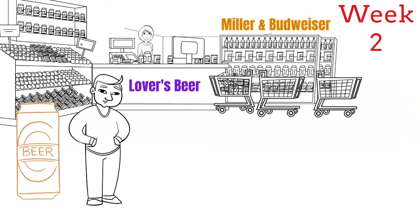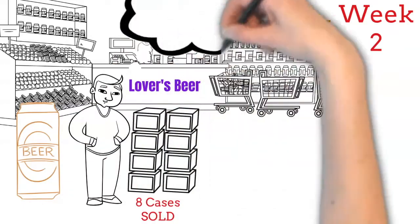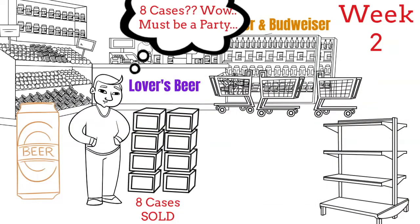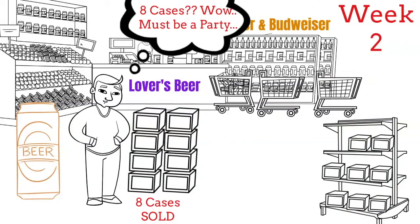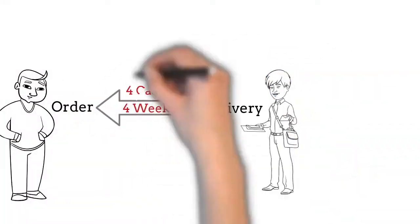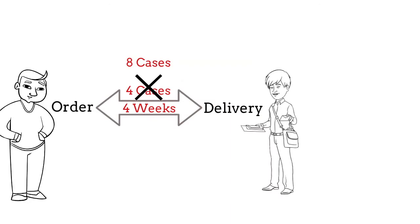Suddenly, let's say in week 2, the retailer sold 8 cases of the Lover's Beer instead of usual 4. He simply thought it might have been a party or something and that's why he sold 8 cases instead of the average 4 cases a week. He didn't worry much as he still had 8 cases of Lover's Beer in stock. In order to bring his inventory back to 12, he ordered 8 cases of Lover's Beer this week.